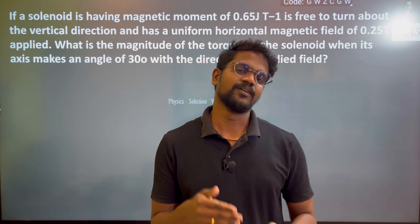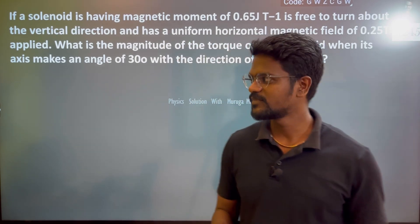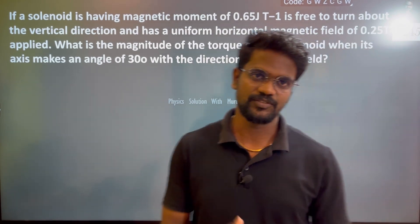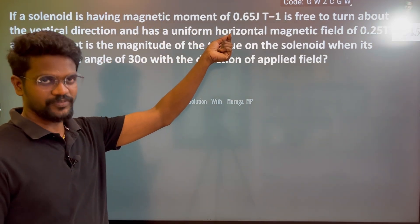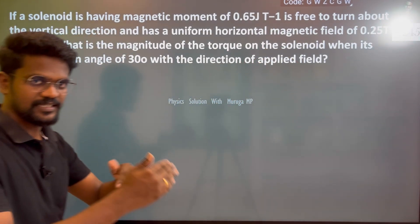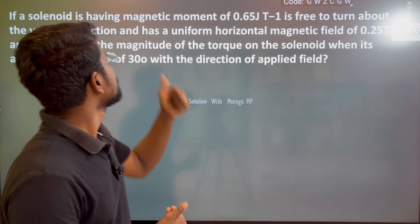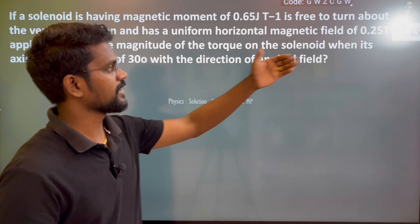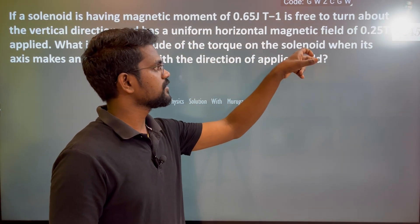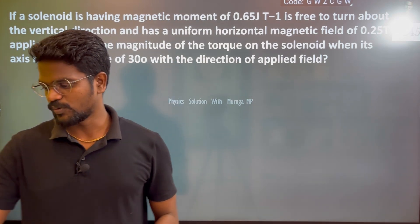Hi everyone, here we have an important problem — number 245 from the playlist check. So it is the 245th problem after a long time, let me try. So if a solenoid has a magnetic moment of 0.65 tesla, and is free to turn about its vertical direction in a uniform horizontal magnetic field — what is the magnitude of the torque on the solenoid when its axis makes an angle of 30 degrees with the direction of the field applied?